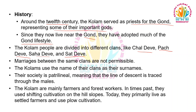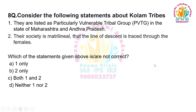Marriages between the same clans are not permissible, and the Kolams use the name of their clans as their surnames. Their society is patrilineal, meaning the line of descent is traced through the males. The Kolam are mainly farmers and forest workers. In times past, they used shifting cultivation on the hill slopes. Today, they primarily live as settled farmers and use plough cultivation.